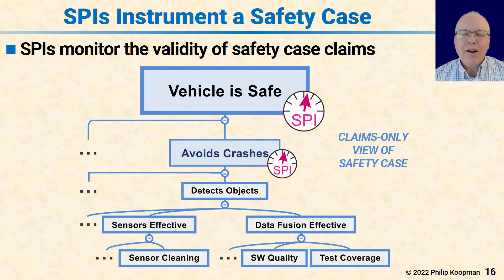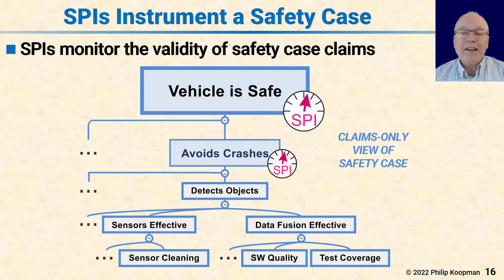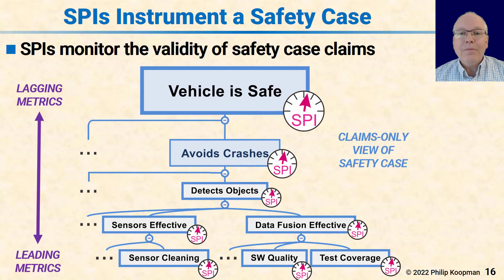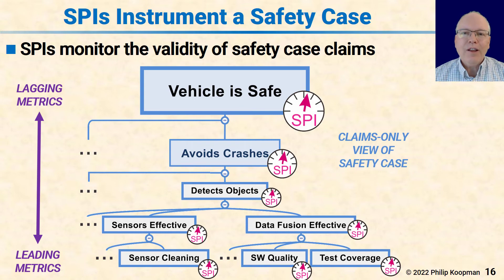For example, the vehicle is safe if it crashes hypothetically one tenth as often as a human-driven vehicle. You may say, we had a crash, but over the fleet, crashes are happening only 10% as often as for human vehicles — so that SPI indicates we're actually doing OK on the safety case. In principle, every single claim in the safety case can have an SPI associated with it. In practice, it's a large number of claims spread throughout the safety case. But if you have a claim and can figure out how to measure it, that's the opportunity to have an SPI.